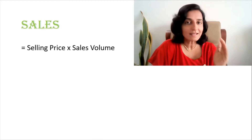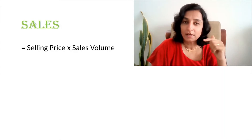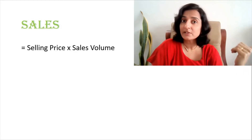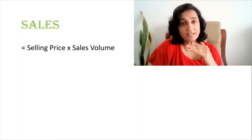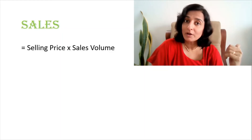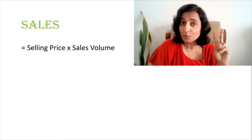Good morning everyone. In today's session we will be discussing sales variances — it is a pretty easy variance. Sales is nothing but selling price multiplied by sales volume or quantity. You have a budgeted selling price and a budgeted quantity for the forthcoming year. If you sell goods at a price higher or lower than the budgeted selling price, or sell a quantity higher or lower than the budgeted quantity, you have a variance. Sales variance can therefore be divided into two: the sales price variance and the sales volume variance.